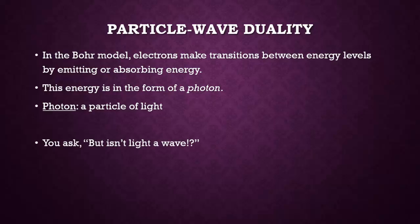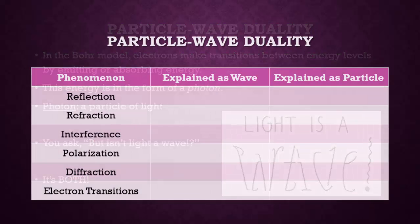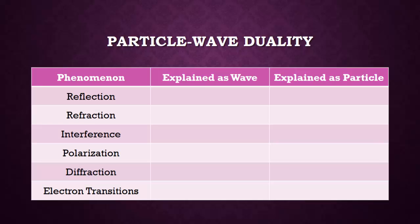This might prompt you to ask: isn't light a wave? Actually, it's both. There are many phenomena that involve light — some can be explained as light behaving like a wave, others as light behaving like a particle. Reflection, refraction, interference, polarization, and diffraction can all be explained as light behaving like a wave. However, the electron transition phenomenon cannot be explained if light is behaving like a wave. Reflection and refraction can also be explained as light behaving like a particle, but a particle model cannot explain interference, polarization, or diffraction. Most importantly, the only way we can explain electron transitions is as light behaving like a particle.